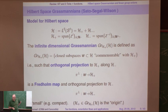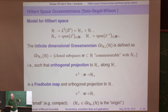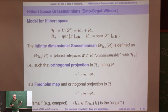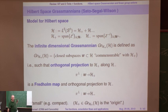The Grassmannian is modeled on the subspace H-plus, which is roughly half the total space. It contains closed subspaces W of the same infinite nature as H-plus, which are commensurable with H-plus — meaning the orthogonal projection from W to H-plus is a Fredholm operator. It should be close to H-plus with finite index, and the complementary projection to H-minus should be compact. I'm using the definitions from the classic paper by Segal and Wilson.